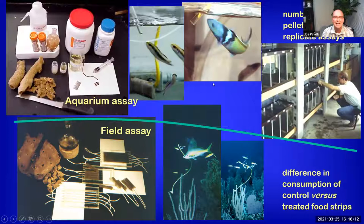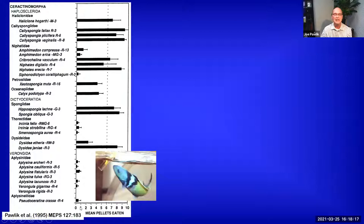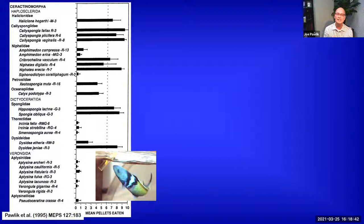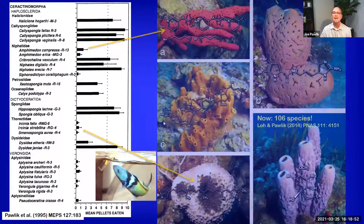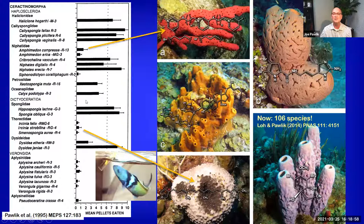So what do the data from these aquarium assays look like? For many species of sponges, the fish ate very few of the pellets treated with the chemical essence from sponge tissue. But interestingly, for other species, they ate almost all of them. This assay proved very useful because we could use it to isolate the actual chemical compounds from the tissue responsible for this effect. Over the course of many years and many master's student projects, we came up with the chemical defenses of most of the species that were chemically defended, and you can see some of the structures superimposed over pictures of the beautiful sponges they come from.